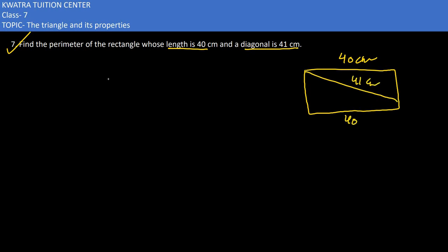So if we notice this, this is nothing but a forming of right-angle triangle. If we know that base is 40 and hypotenuse is 41 cm, I can easily find the perpendicular.